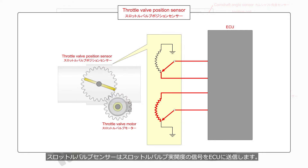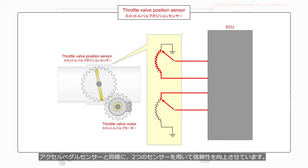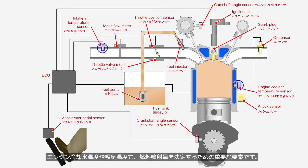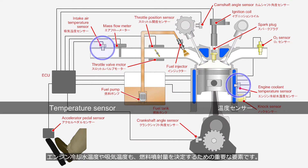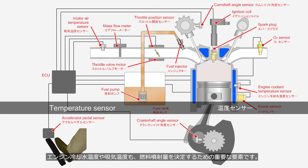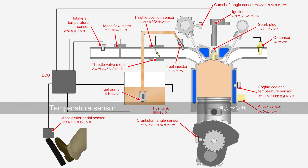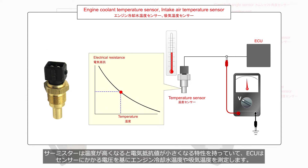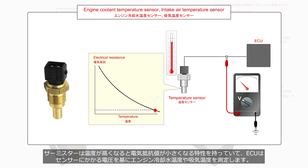The throttle valve sensor transmits the signal of the actual throttle valve opening angle to the ECU. Similar to the accelerator pedal sensor, it enhances reliability by utilizing two sensors. Engine coolant temperature and intake air temperature are also crucial factors in determining the fuel injection quantity. These temperature sensors utilize a type of semiconductor known as a thermistor, which decreases electrical resistance as the temperature rises. The ECU measures these temperatures based on the voltage applied to the sensor.